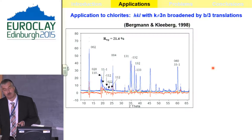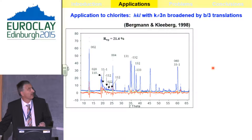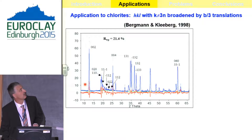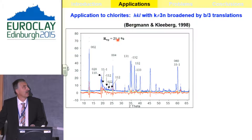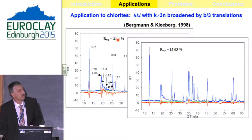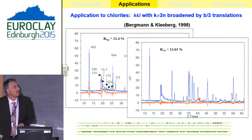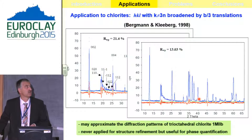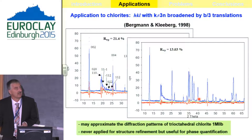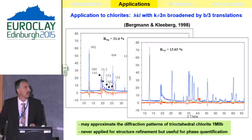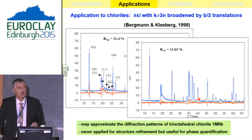This approach worked very well for chlorite. A conventional fitting gives a high RWP, but with this model the fit is much better — it can approximate the diffraction patterns of chlorite. We never tried to apply it for structural refinement because the structure is well known, but it was useful for phase quantification. Of course, the idea comes up to enhance this approach to more types of disorder, for example by introducing other classes of reflections, but that requires more and more parameters.